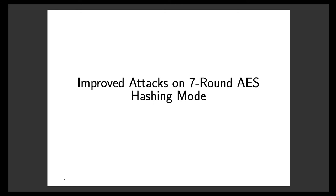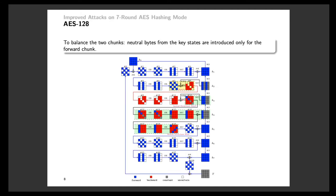In the next section, I will explain our improved meet-in-the-middle preimage attacks on 7-round AES hashing mode. The picture here is an overview of our attack on 7-round AES-128. The main difference from Sasaki's attack is that we introduce neutral bytes from the key schedule rather than fixing the key input. It is also important to note that these two neutral bytes in the key schedule are only used for the forward chunk, none is used for the backward chunk. This enables us to exploit freedom from the key to balance the computations of forward and backward.